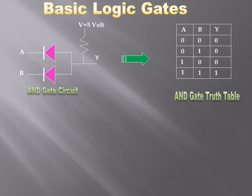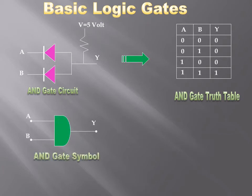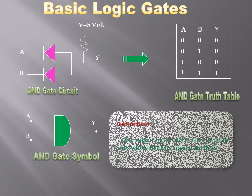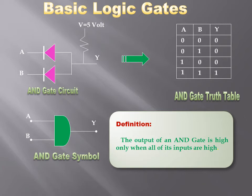Looking at the truth table: for all conditions other than all-high inputs, the output will be 0. The unique condition of this gate is that the output will be high only when all of its inputs are high. We define the AND gate as: the output of the AND gate is high only when all of its inputs are high.